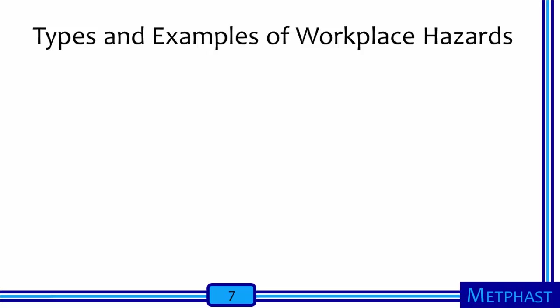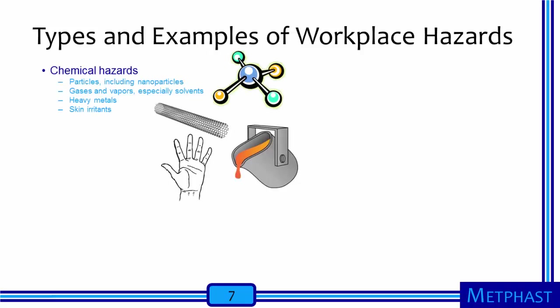If we generalize and categorize some of the hazards that exist in different workplaces, we can anticipate and recognize chemical hazards that include airborne particles such as nanoparticles. Workplaces may contain different gases and vapors, especially solvent vapors, as many solvents are used in industrial settings. Heavy metals may be present, including molten metals, metals used in electronics production, and metals released to the air during machining. A large variety of skin irritants may be present as well, with dermatitis being one of the most common workplace diseases.